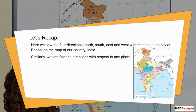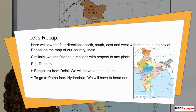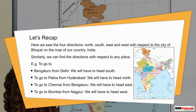Similarly, we can find the directions with respect to any place. To go to Bangaluru from Delhi, we'll have to head south. To go to Patna from Hyderabad, we'll have to head north. To go to Chennai from Bangaluru, we'll have to head east. To go to Mumbai from Nagpur, we'll have to head west. To go to Bali, we'll have to head east.